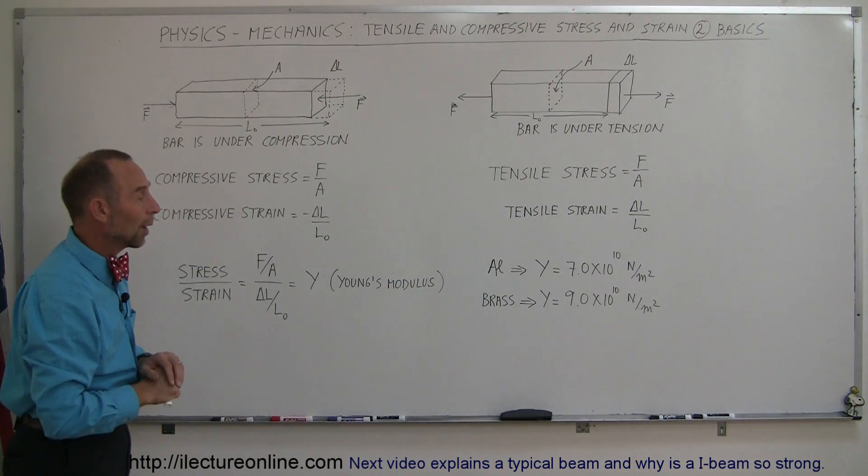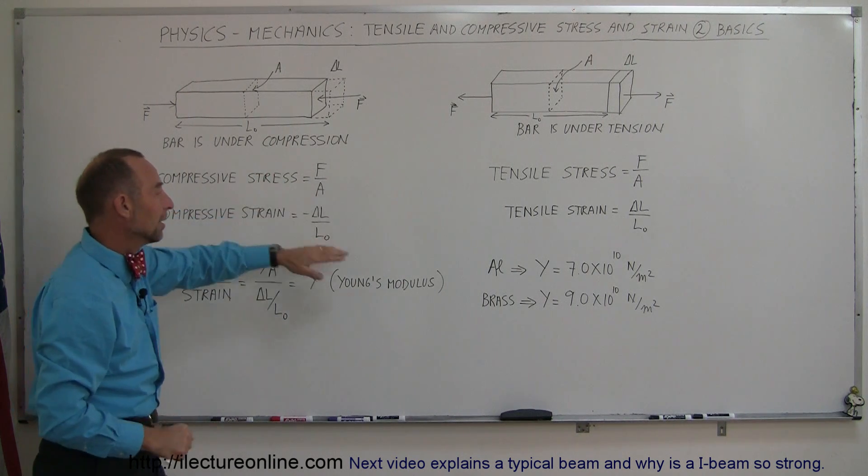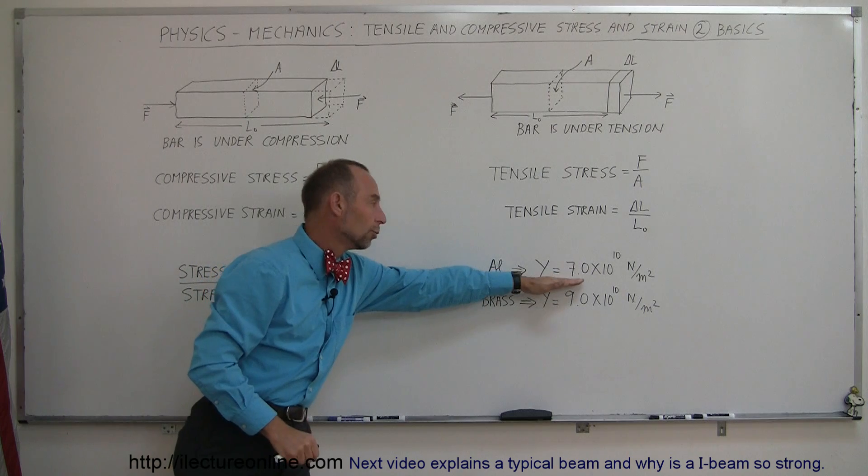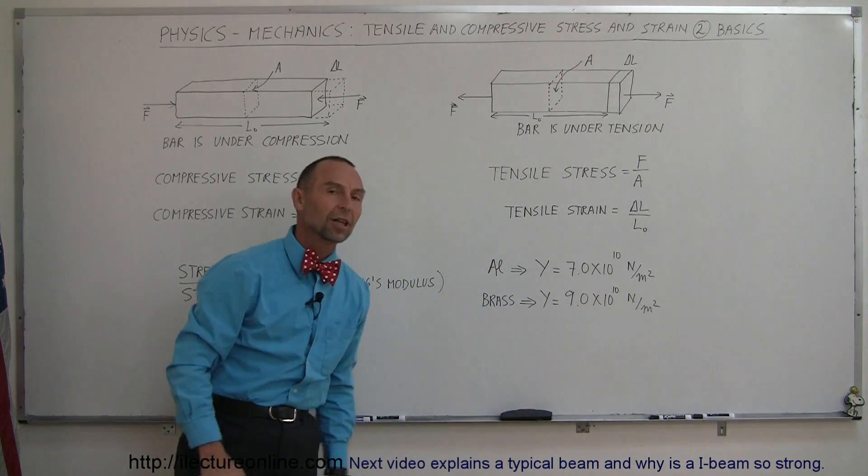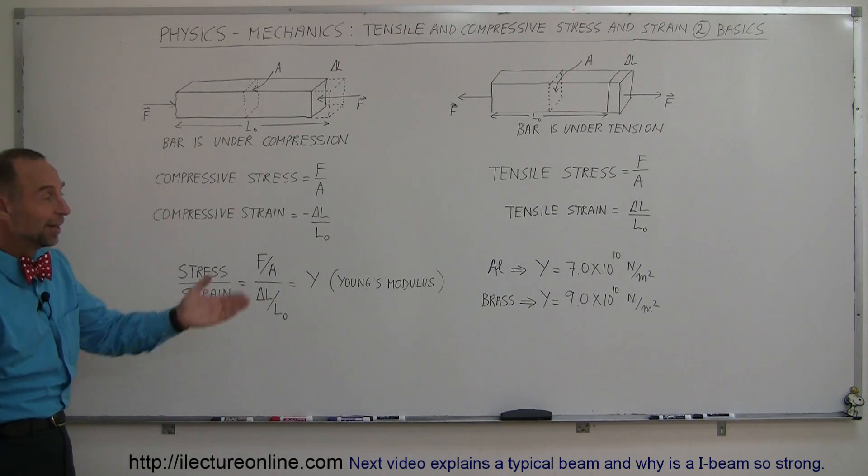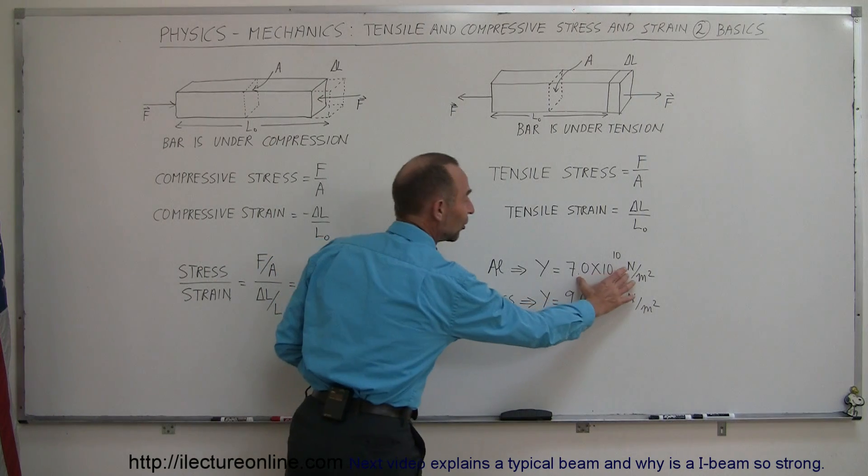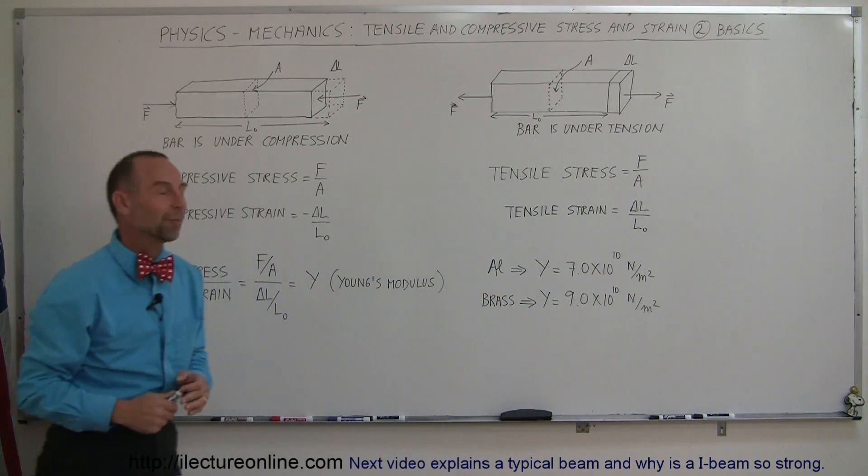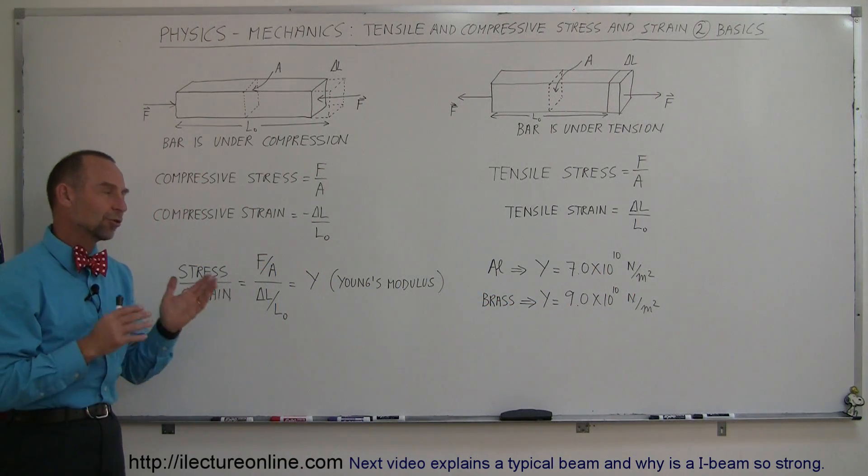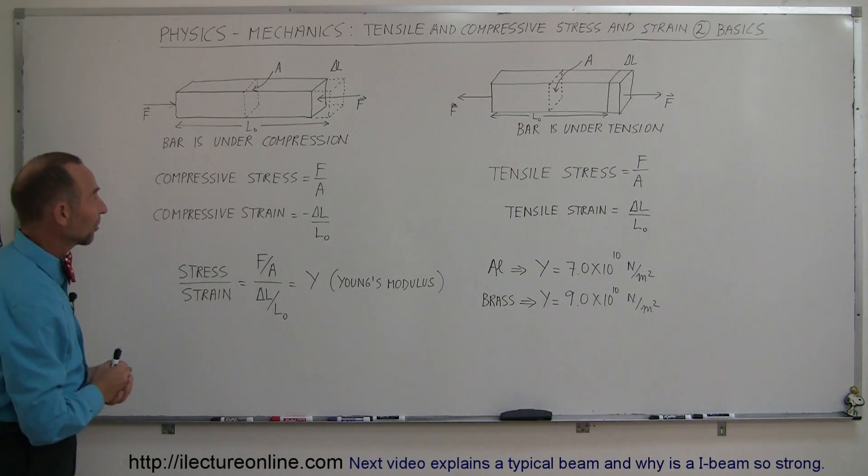The ratio of stress over strain shows the result. Aluminum, not so good. Brass, a little bit better. But even though aluminum has a smaller number, that's still a really big number, and you need a lot of force to cause any appreciable deformation, even with aluminum. That's how you look at tensile stress and compressive stress.